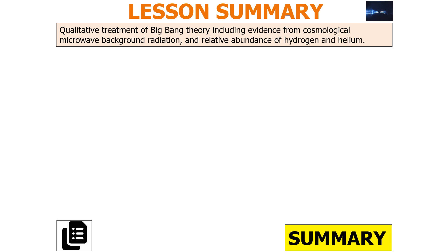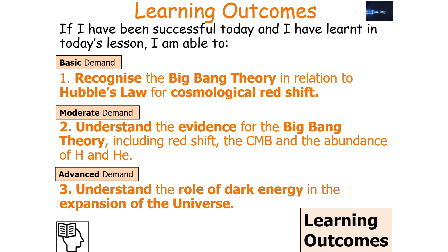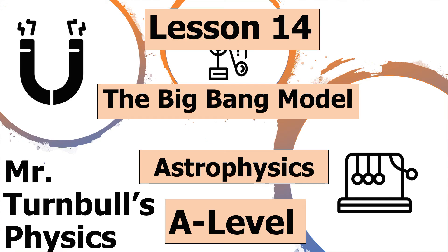We should be able to have a qualitative treatment of the Big Bang Theory, including evidence from the cosmological microwave background radiation and the relative abundance of hydrogen and helium. In today's lesson, we have recognised the Big Bang Theory in relation to Hubble's Law of cosmological redshift, and understood the evidence for the Big Bang Theory including redshift, the CMB, and the abundance of hydrogen and helium. I hope you've enjoyed today's lesson on the Big Bang Model, part of the astrophysics topic in AQA A-level Physics. Thank you very much for watching, and have a lovely day.